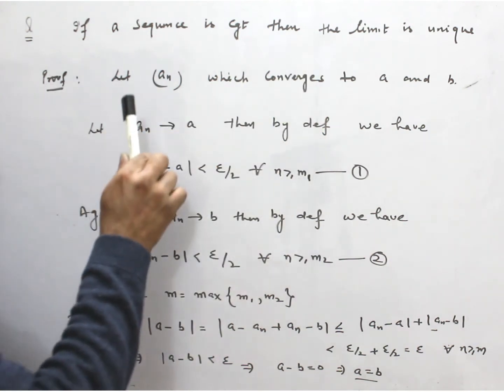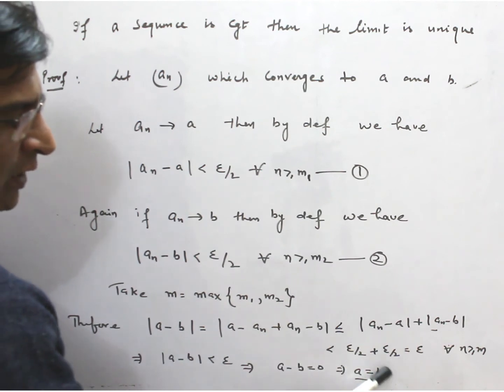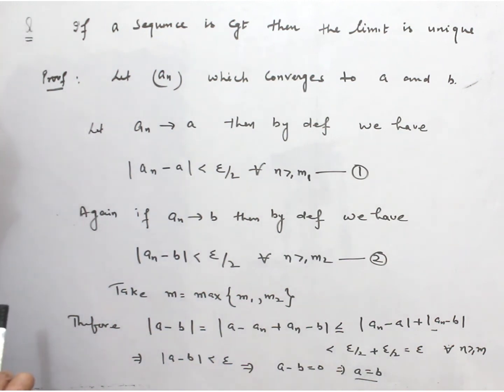That means we assumed the sequence aₙ converges to a and b, but here we have showed that a and b are the same limits. So this is the proof of the result.